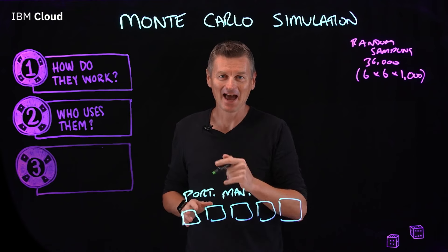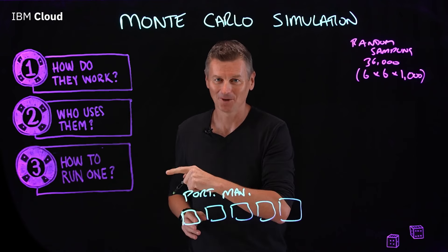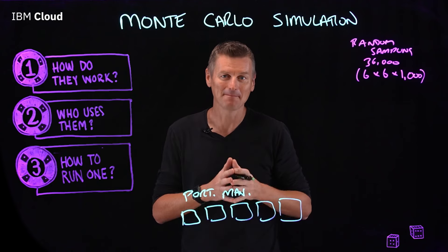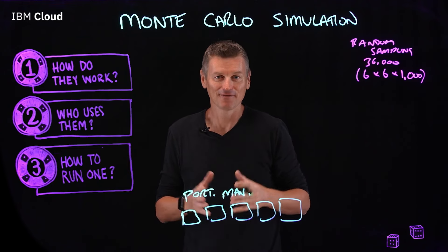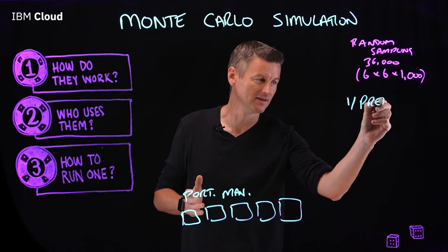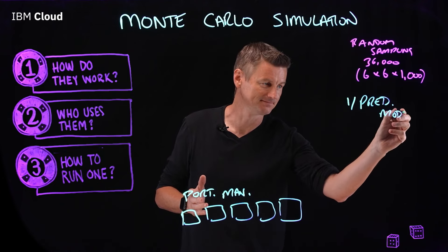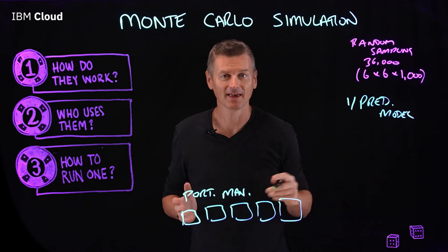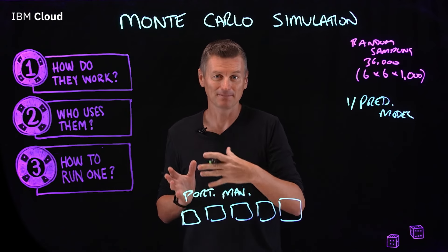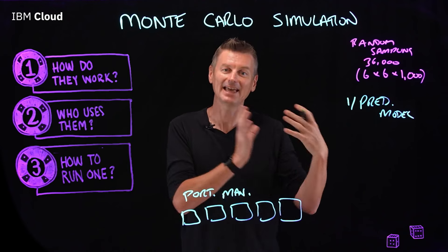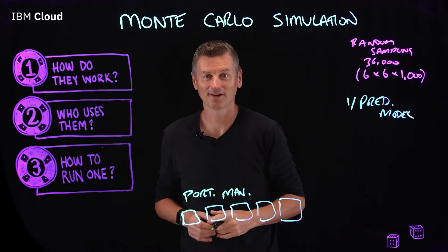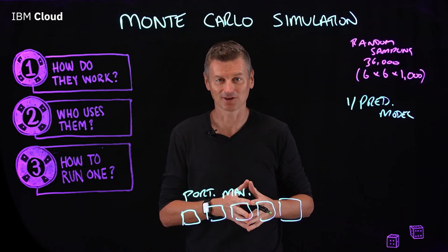Number three: how to run one. Monte Carlo techniques involve three basic steps. First, you set up the predictive model. This involves identifying both the dependent variable to be predicted and the independent variables — also known as the input, risk, or predictive variables — that will drive the predictions.